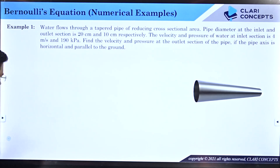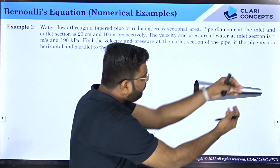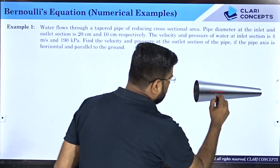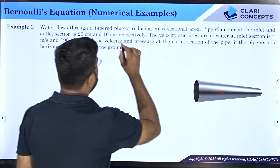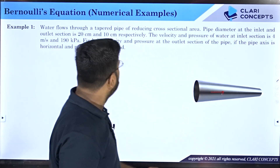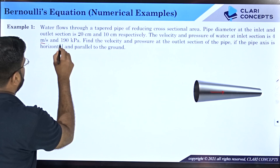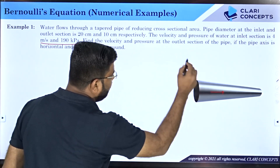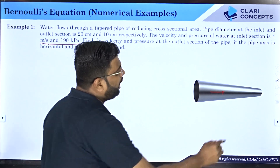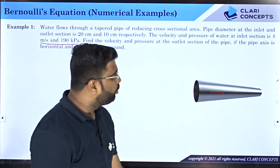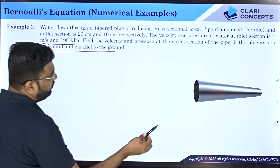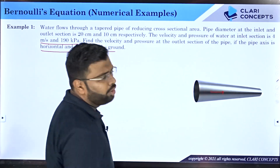The pipe is a tapered section. The inlet diameter is 20 centimeters and the outlet diameter is 10 centimeters, with fluid flowing from left to right. The velocity and pressure of water at the inlet are 4 meters per second and 190 kPa. Find the velocity and pressure at the outlet section, given the pipe axis is horizontal and parallel to the ground.